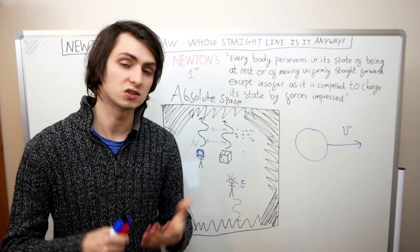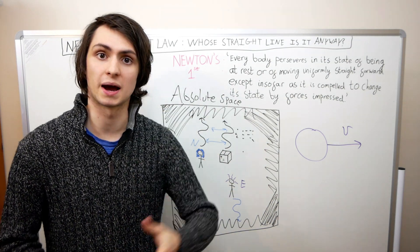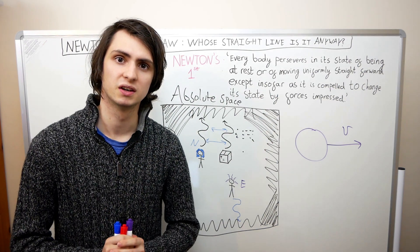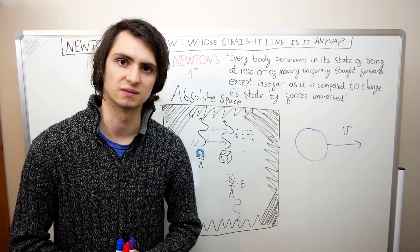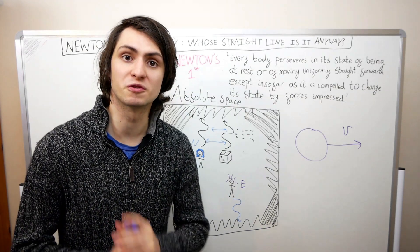In hindsight, we know that this is the correct thing to do. Recognising the problems with the first law and with absolute space is the first step on the path to Einstein's special relativity. Thanks for watching and I hope Newton's laws don't seem quite as boring as they did before you watched this video.